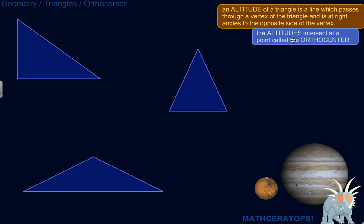And an altitude is a line which passes through the vertex of a triangle, and it's at right angles with the opposite side of that vertex.